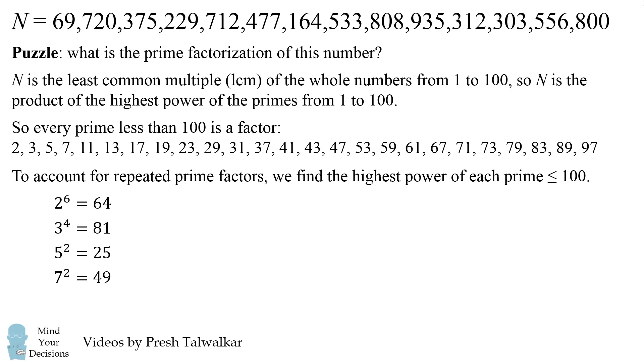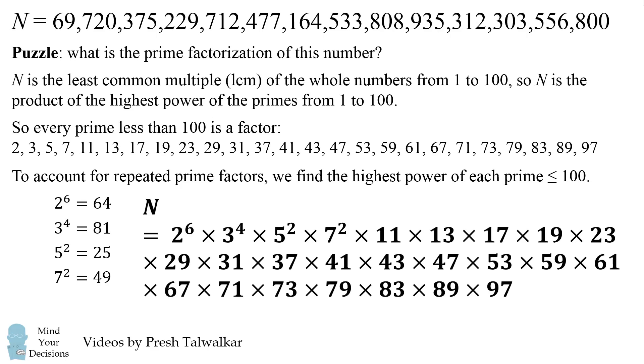So these are all the prime factors that are in N. So we can then write N is equal to the product of all these prime factors raised to the highest power that's less than 100. That's 2 to the power of 6, 3 to the power of 4, 5 squared, 7 squared, and then all the other primes: